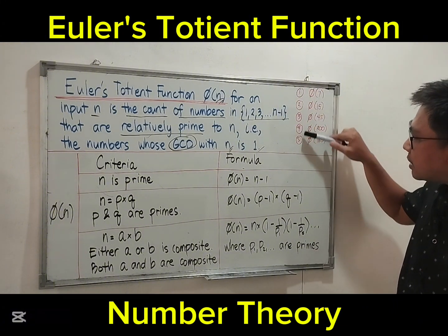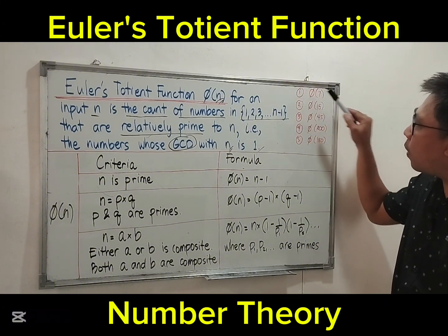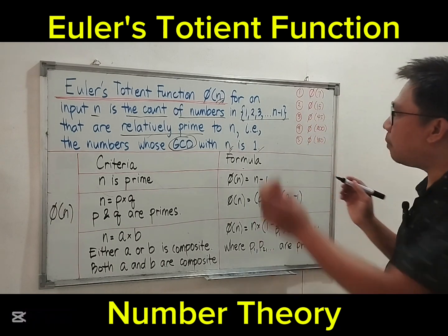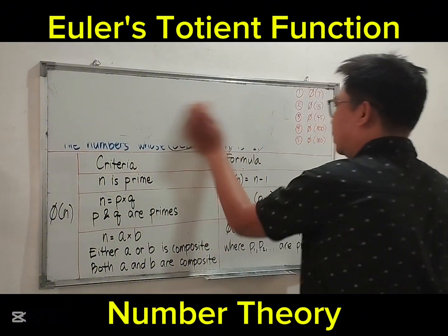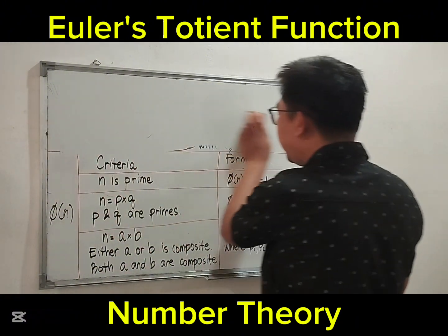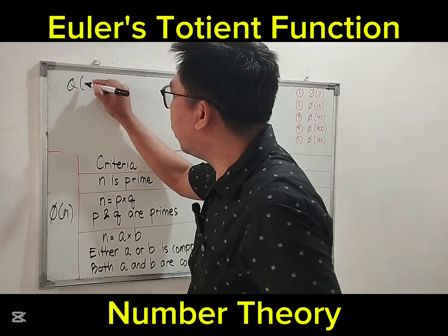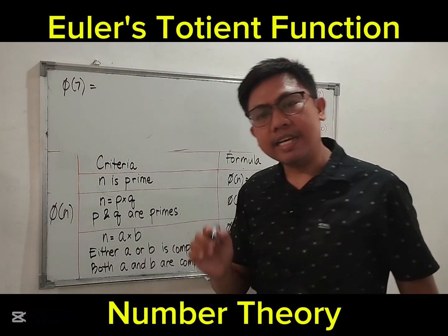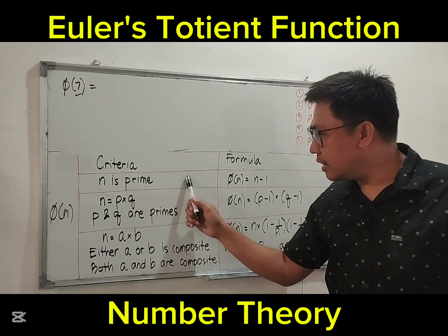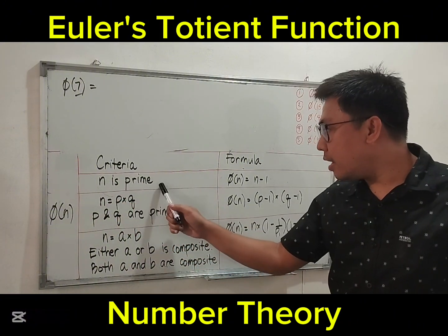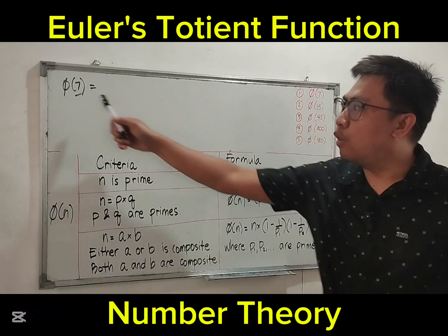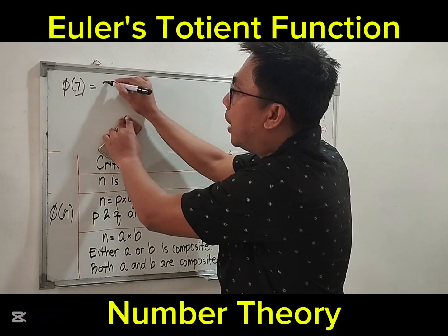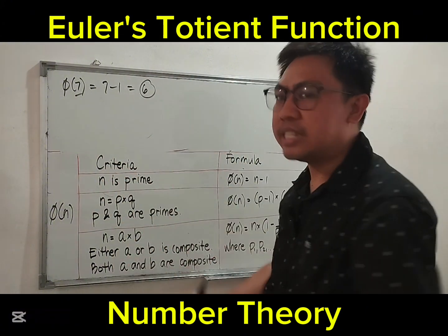We are going to solve five examples. Number 1: phi of 7. Since 7 is prime, this is case 1 — n is prime — so the answer is just subtract 1. Phi of 7 equals 7 minus 1, which equals 6.